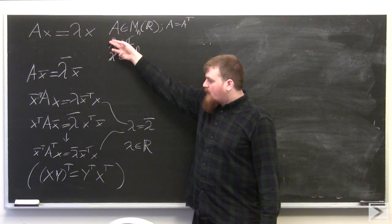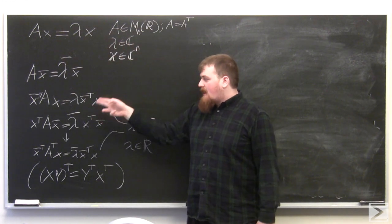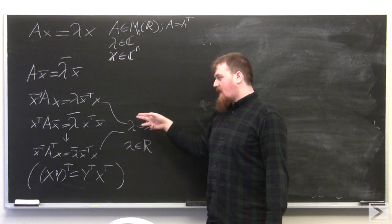If we pre-multiply this by X bar, we get that X bar transpose A X equals lambda X bar transpose X.